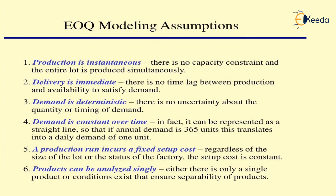Products can be analyzed singly — either there is only a single product, or a condition exists that ensures the separability of the products. All of these are assumptions utilized in this model for obtaining a perfect inventory model. But since they are assumptions, they can never be entirely true. For example, constant demand is never really possible since demand is always unstable and highly depends upon the market rate.